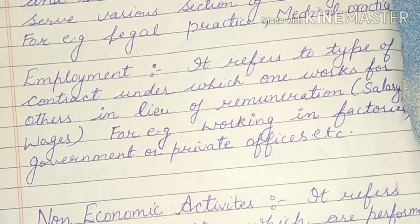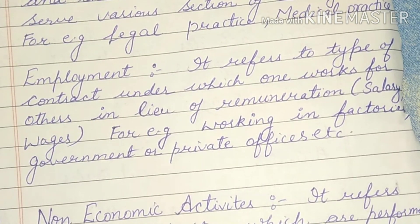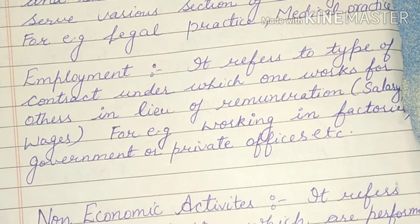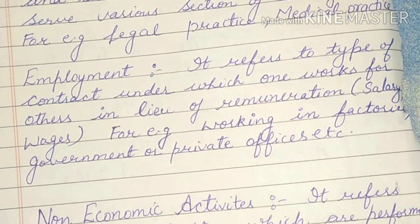But when that same person goes to a park and does gardening there and receives money in return, then the same work — gardening — becomes an economic activity. So gardening at home is a non-economic activity, while gardening at a park for a salary is an economic activity.